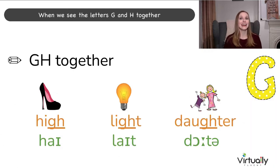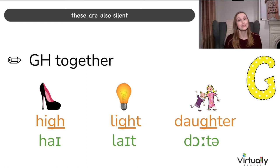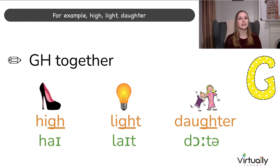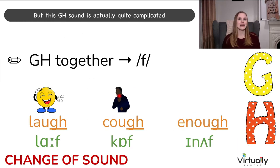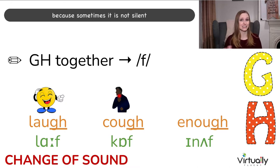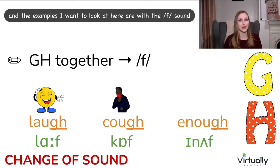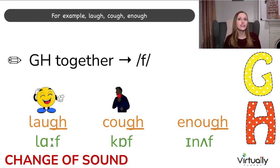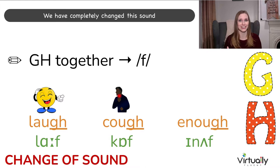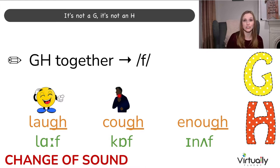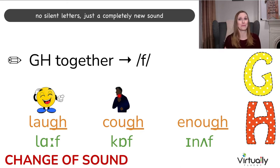When we see the letters GH together, these are also often silent. For example: high, light, daughter. But GH is quite complicated because sometimes it is not silent — sometimes it completely changes the sound. The examples I want to look at here are with the F sound: laugh, cough, enough. We have completely changed this sound — it's not a G, it's not an H, there are no silent letters; it's just a completely new sound.